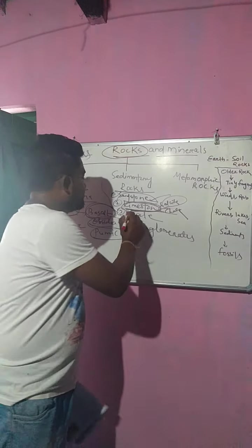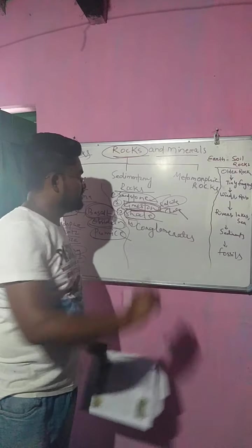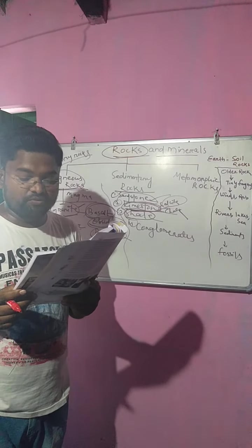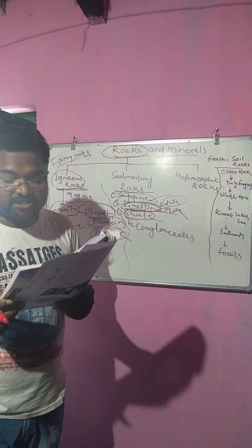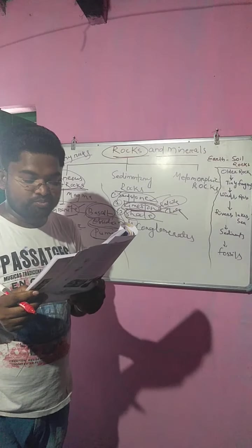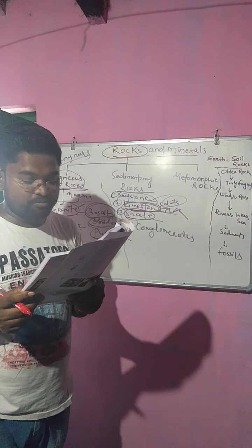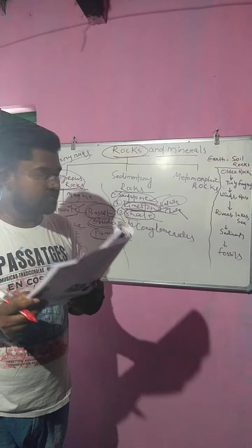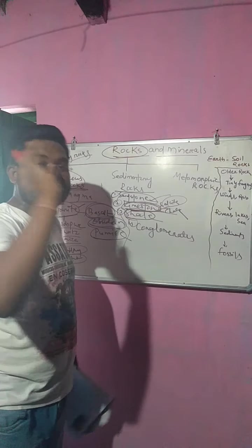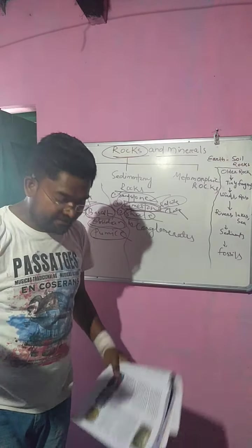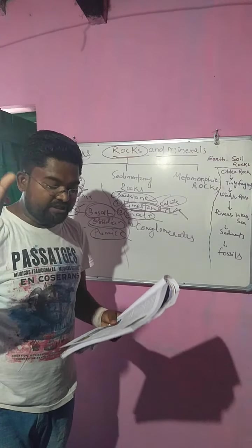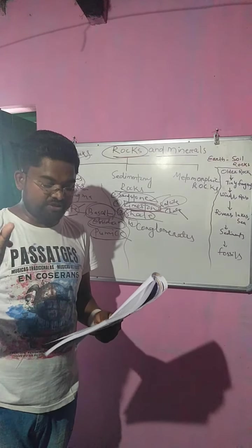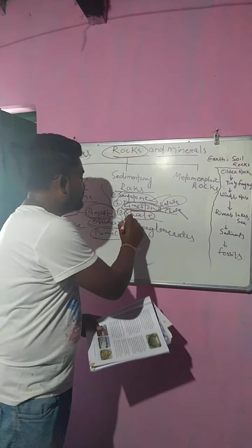Now let's talk about shale. Shale is formed when layers of clay and silt harden. It is smooth and mostly used to make cement, tiles, and bricks.